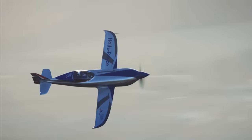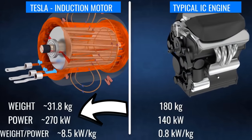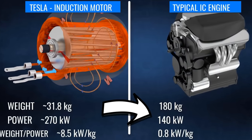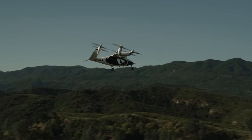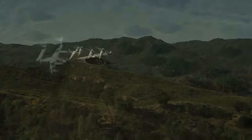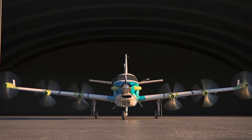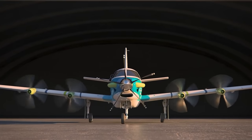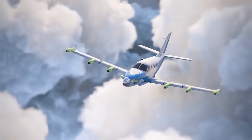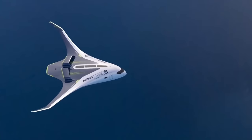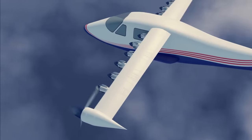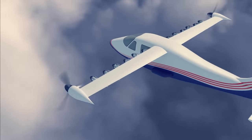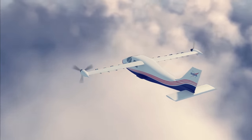Electric propulsion is becoming a reality for full-scale aircraft, and the small size and lack of vibration of electric motors compared to the combustion engines they replace makes various motor placements around the aircraft possible that were previously impractical. Because these placements can positively impact all-around performance, especially efficiency, different combinations are being tried. One motor placement possibility that can directly affect efficiency is the wingtip.